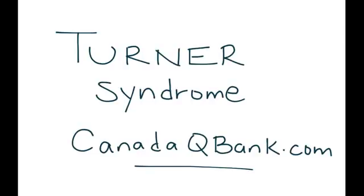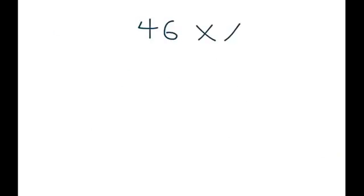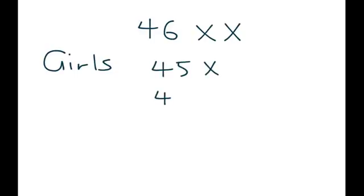Turner Syndrome is the topic for this video. Turner Syndrome is a genetic condition. Normal females will have 46XX as their karyotype. But girls with Turner Syndrome will have 45X — sometimes written as 45X- or 45XO. Essentially all of these represent the same thing: the patient is missing an X chromosome.